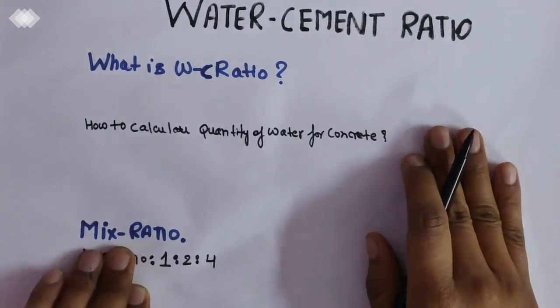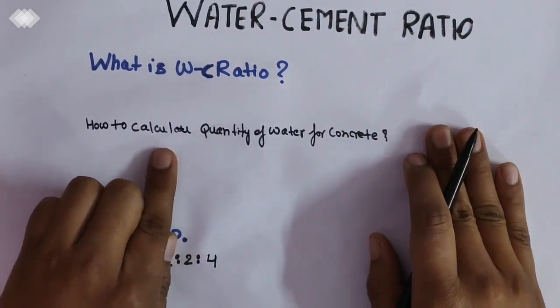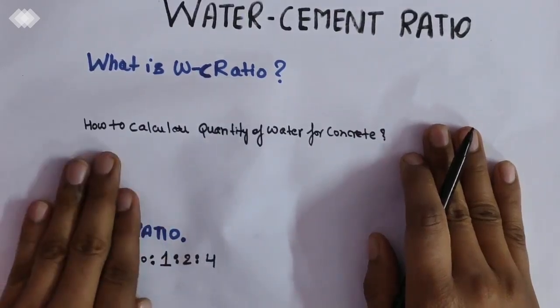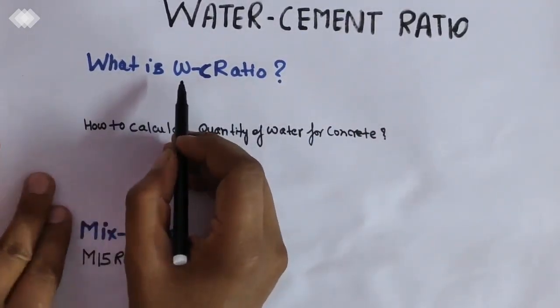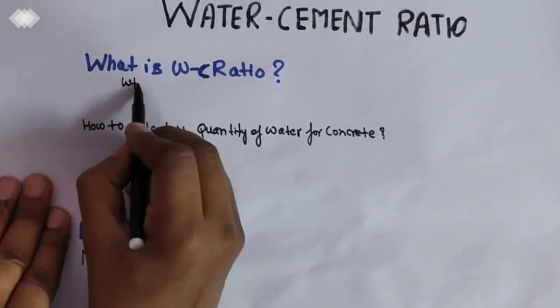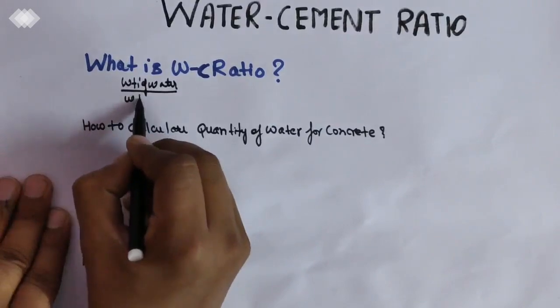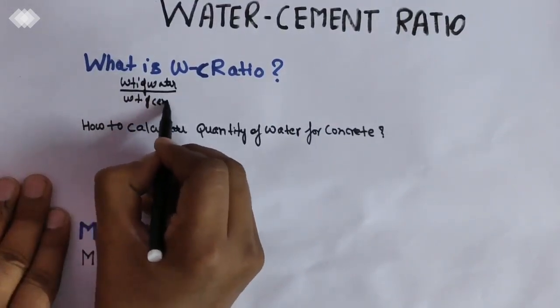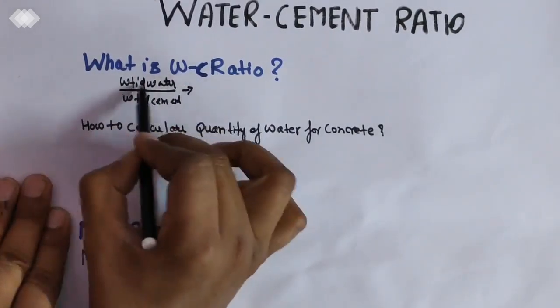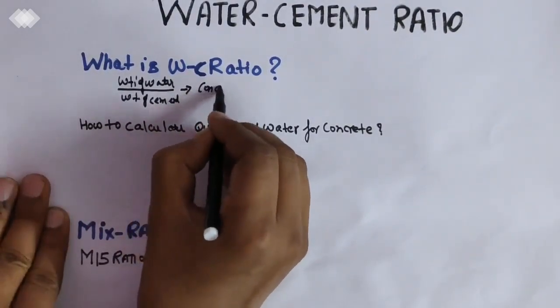So water-cement ratio is also an important factor for increasing the strength of the concrete and making the slab suitable for pouring concrete. What is water-cement ratio? This is the ratio of weight of water to the weight of cement. The weight of water to the weight of cement is known as the water-cement ratio.